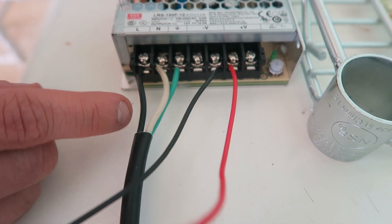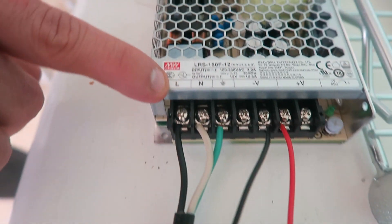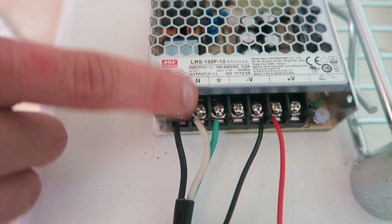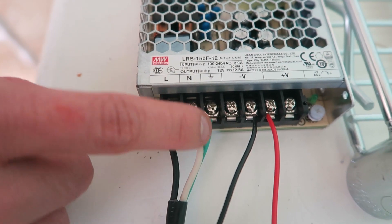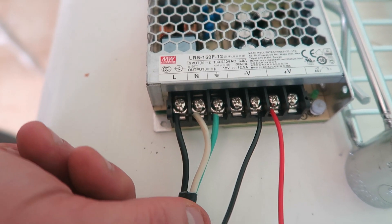There's the black, white and green. So if you look up here, the L, you connect your black wire. N is the white one. And then the green one is going to the ground here. So you connect those three that way.